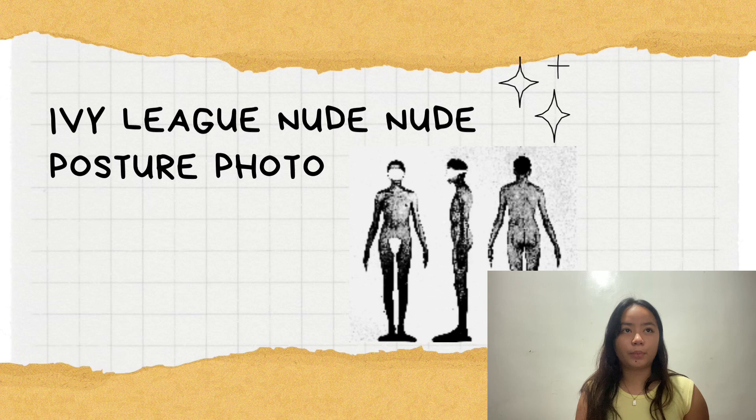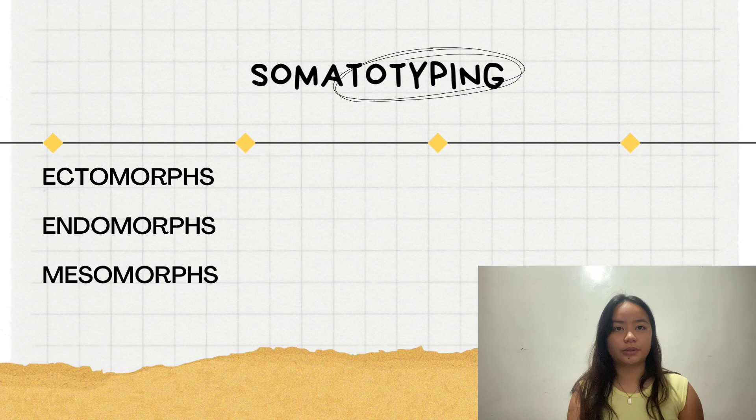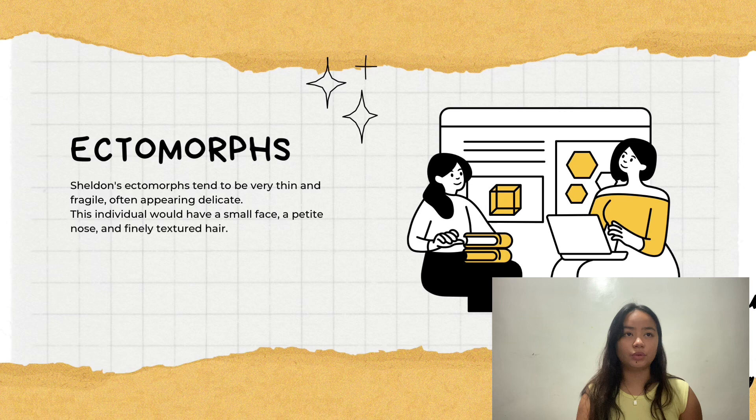These are the IV-leg nude posture photos. There are three classifications of somatotyping: first is the ectomorph, second is the endomorph, and the third is the mesomorph.